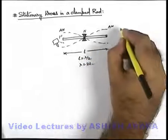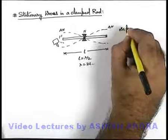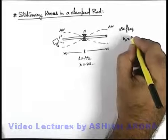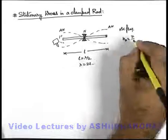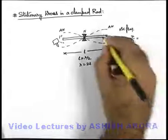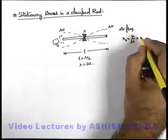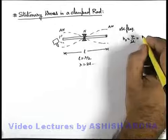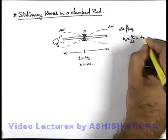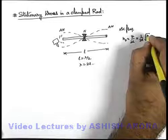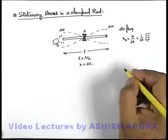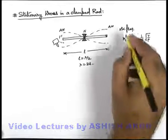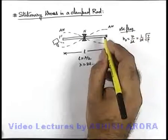In this situation, oscillation frequency can be calculated as n₀, which can be written as v by lambda, and wavelength is 2L. For a solid metal rod, the longitudinal oscillations wave velocity can be written as root of Young modulus by density. This'll be the fundamental frequency of oscillation.